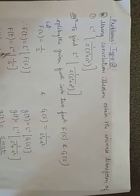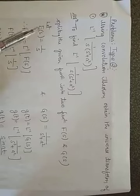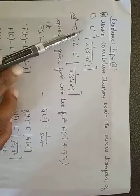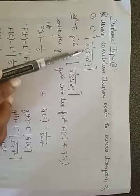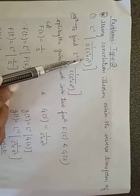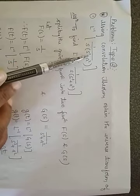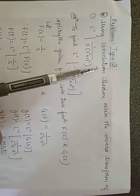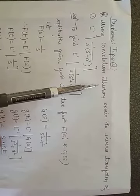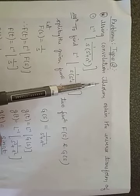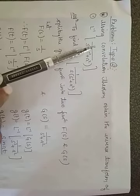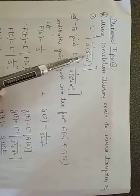This is a Type 2 problem. The question is: using the convolution theorem, obtain the inverse Laplace of the function 1 upon s into (s² + a²). We have to find L⁻¹ using the convolution theorem, which requires two functions f(s) and g(s). So we try to split the given function into two functions.